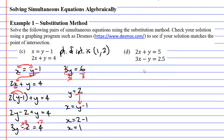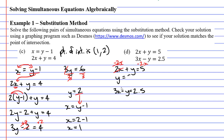Moving on to question D, we have two equations: 2x plus y equals 5 and 3x minus y equals 2.5. There's no obvious way to do substitution here because neither equation says y equals something or x equals something. We fix that by rearranging the first equation — subtracting 2x from both sides leaves y on its own, giving y equals 5 minus 2x. This can now be substituted in place of y in the second equation.